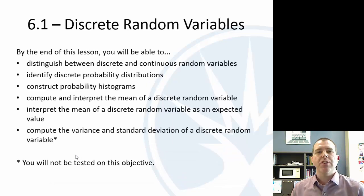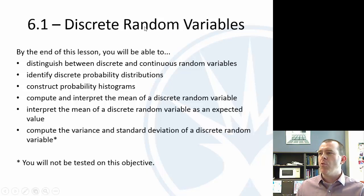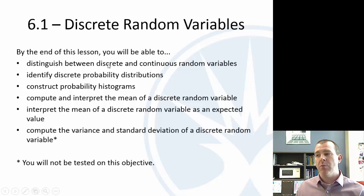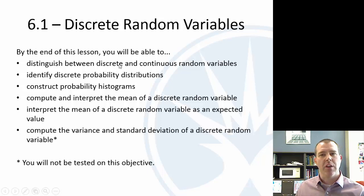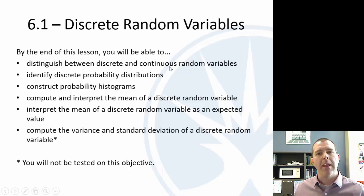Let's jump into the first section. What we're going to be doing here is introducing and extending probability. So instead of looking at probability of particular events, we're going to define something called a random variable and talk about probability distributions. The ones we're looking at in Chapter 6 are going to be discrete probabilities — so whole numbers, like probability of one or two or three. Continuous random variables we'll talk about more in Chapter 7.